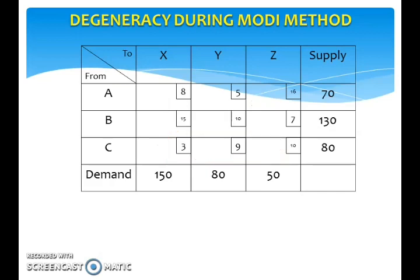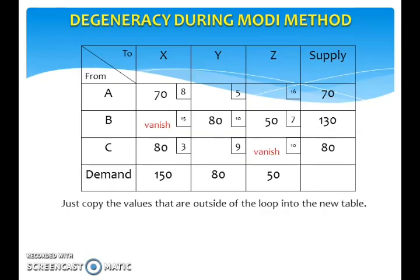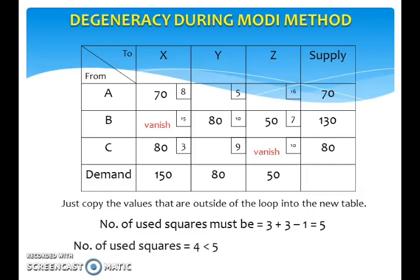At the new table, we will have 50 here and 80 here. Copy the values that are outside of the loop into the new table. In this problem, there are 3 rows and 3 columns. Thus there must be 5 used squares, but here there are only 4 used squares. So degeneracy has happened.